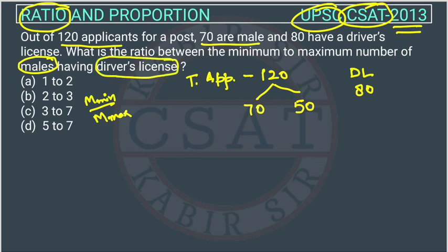We have to consider males with a driver license. We have to find what will be the minimum number of males with a driver license upon the maximum number of males with a driver license. Case 1: we take that all males got the license. Total males are 70. So the maximum possibility is that all 70 have a driver license.